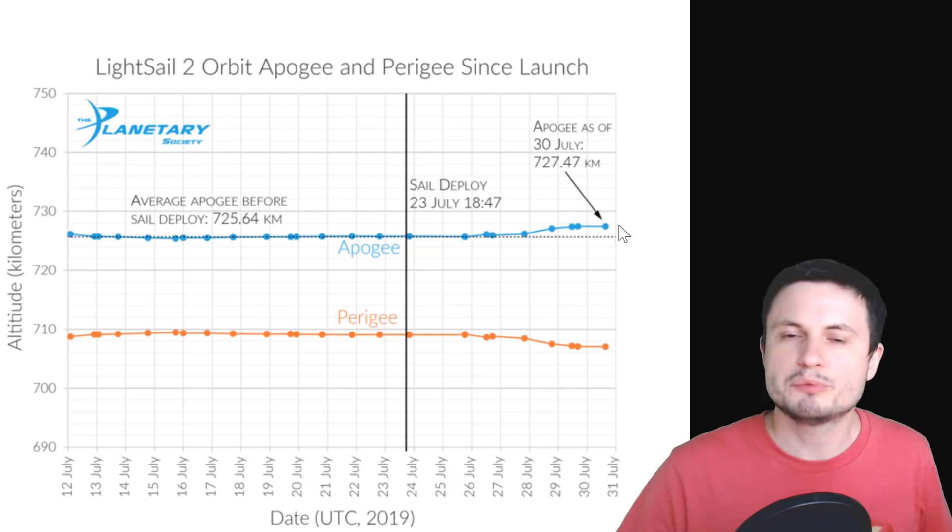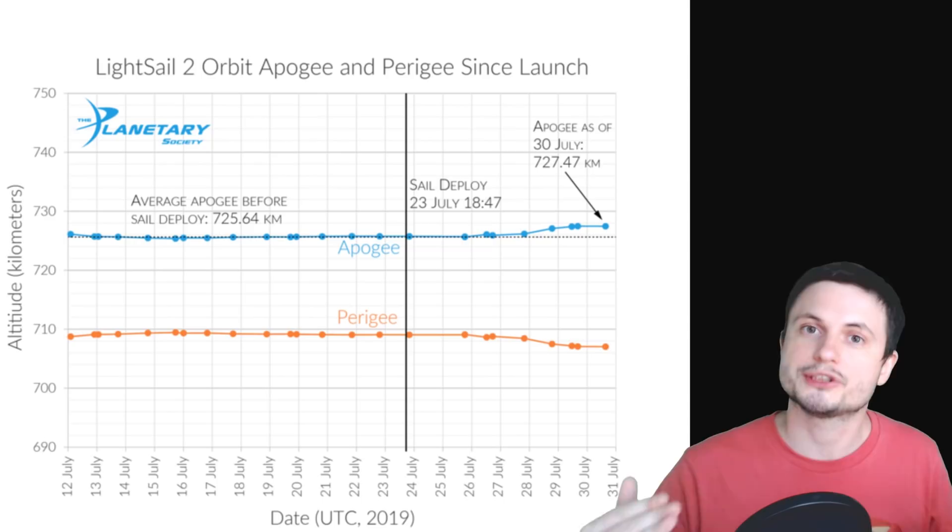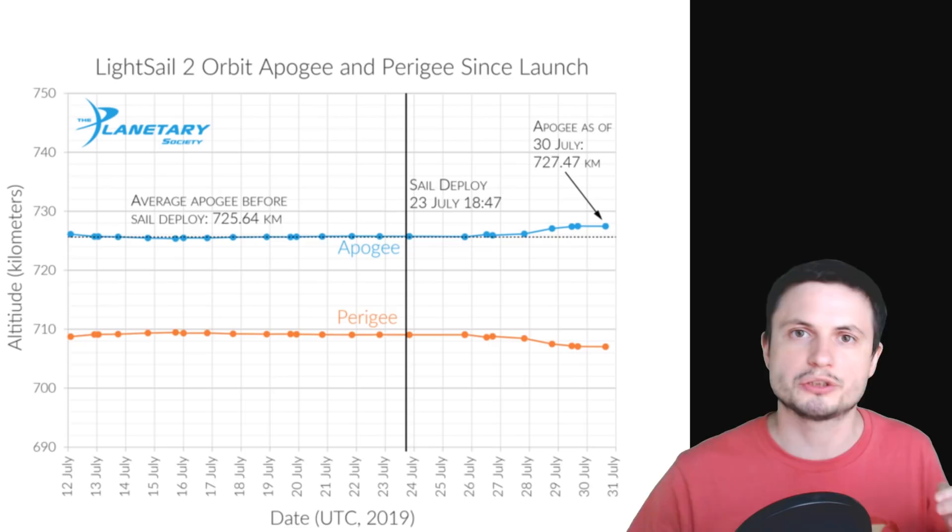And so as of today, we know that this sail definitely works and it's able to increase the highest point of its orbit. Although, unfortunately, the lowest point of the orbit has also been decreasing. Now, the explanation for this right now is that we still have trouble controlling the actual direction of the sail. And so sometimes it's pointing at the sun in a different way, thus causing the sail to also slightly drop in some parts of its orbit. So it's not a perfect solution just yet. We just need to find a way to control the sail better.